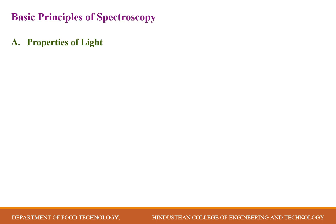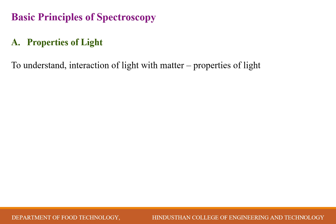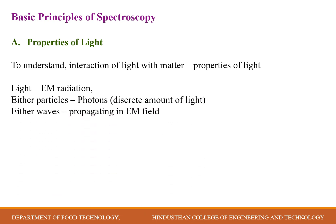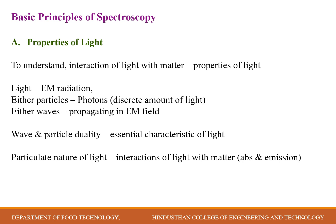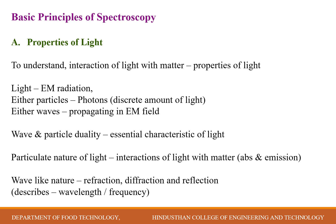Before entering into spectroscopy, we will discuss the basic principles. We first look at the properties of light, since light is the primary source used to analyze food components in spectrometry. Light is an electromagnetic radiation that exists in two forms: a particle form and a wave form. The small particles that carry light energy are called photons, and light also exists as waves when emitted from an electromagnetic source. This dual characteristic of light is widely used in spectroscopic experiments.